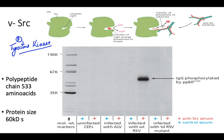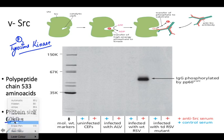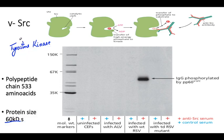SARC is a tyrosine kinase where phosphorylation of tyrosine amino acids occurs via antibody phosphorylation. The size of the SARC protein is around 60 kDa. We are going to check through an experiment whether SARC is a phosphorylated protein, and if it is phosphorylated we can identify it.